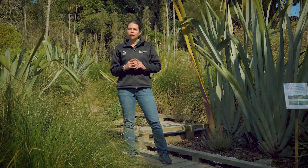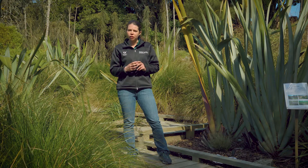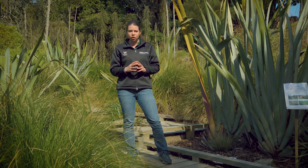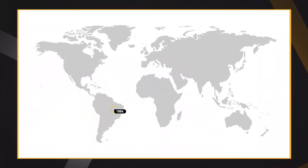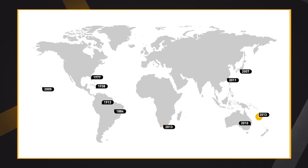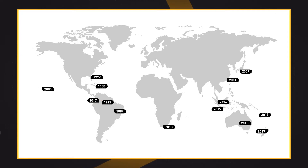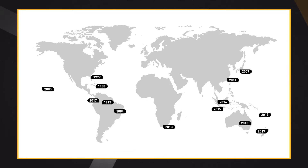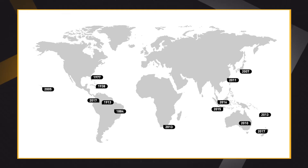Myrtle rust has never been eradicated from an infected country because it spreads rapidly and the spores are invisible to the naked eye. Myrtle rust is native to South America and was first recorded there in the late 1800s. However, it has rapidly spread around the world in the last 40 years and is now established as a pest in many countries including South Africa, China, Indonesia, Hawaii, New Caledonia, and along Australia's eastern and northern seaboard. It is likely that the fungus arrived in New Zealand carried by strong winds from Australia, according to NIWA.